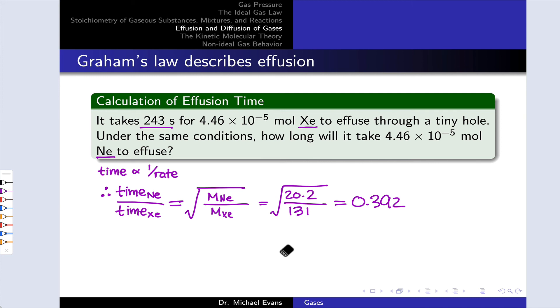And so setting that up, we can say that the time for neon to effuse is 0.392 times the time for xenon to effuse. Plug in the given time for xenon, 243 seconds, and we get 95.3 seconds.